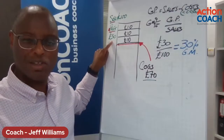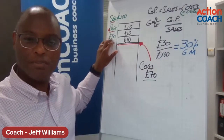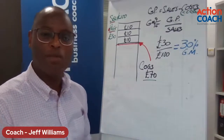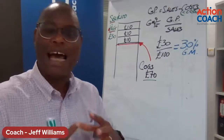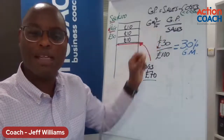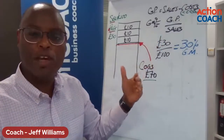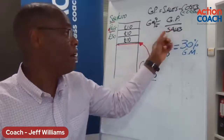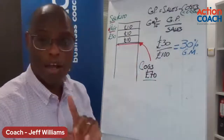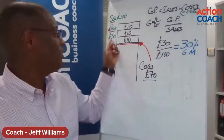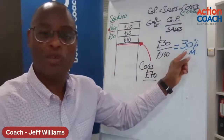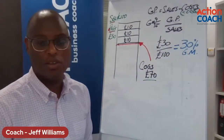So our gross profit is our sales minus our cost of goods sold. In this instance, our gross profit would be £100 minus £70, giving us a £30 profit. We'd also like to express that as a percentage — called our gross margin percentage. We take our gross profit of £30, divide it by our sales of £100, and that gives us a 30% gross margin.